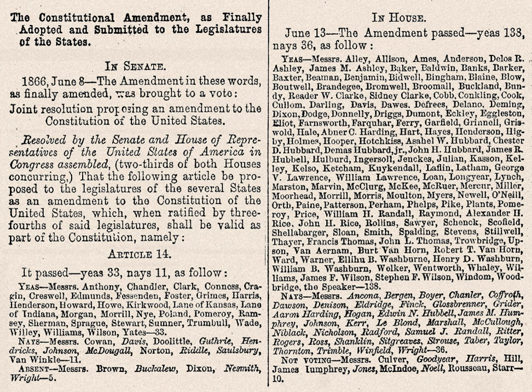The resolution was debated and several amendments to it were proposed. Amendments to Sections 2, 3, and 4 were adopted on June 8, 1866, and the modified resolution passed by a 33 to 11 vote, 5 absent, not voting. The House agreed to the Senate amendments on June 13 by a 138 to 36 vote, 10 not voting. A concurrent resolution requesting the President to transmit the proposal to the executives of the several states was passed by both Houses of Congress on June 18. The Radical Republicans were satisfied that they had secured civil rights for blacks, but were disappointed that the amendment would not also secure political rights for blacks, in particular, the right to vote.